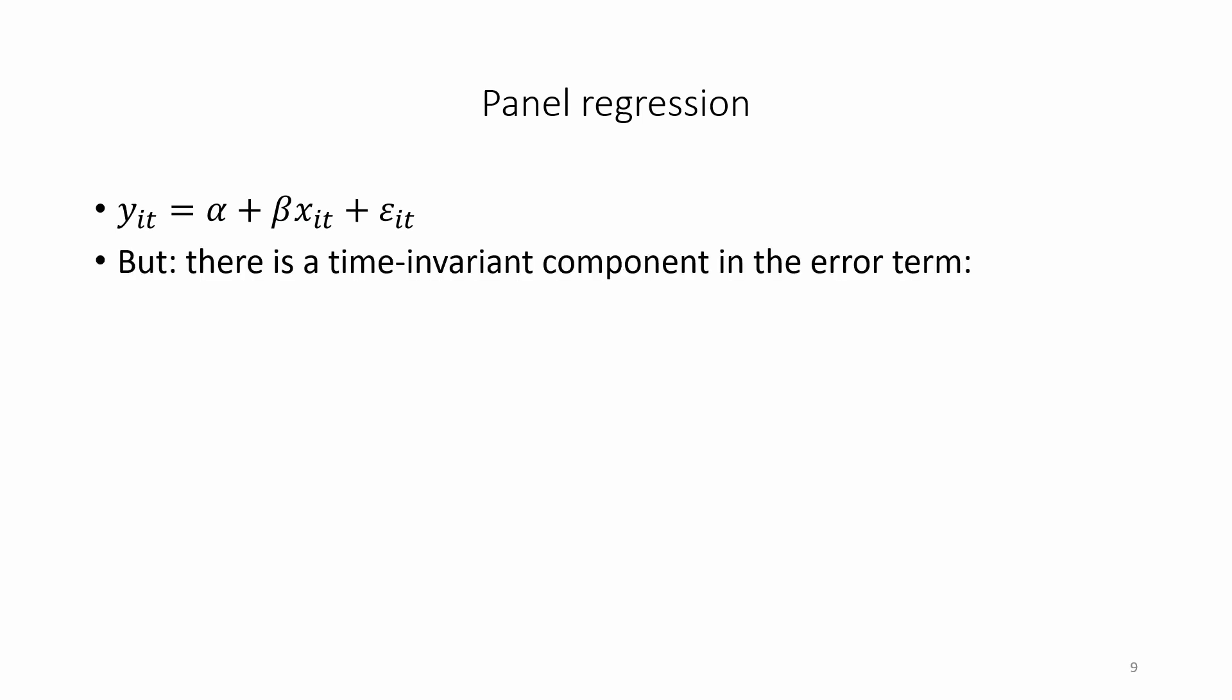An important feature is that there is a time invariant component in the error term. Epsilon_it equals eta_i plus nu_it. Hence, we can write this out more completely as y_it equals alpha plus beta x_it plus eta_i plus nu_it.